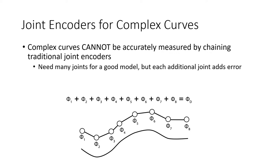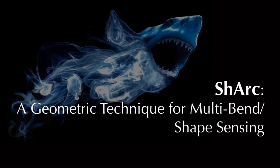You might think: just use a bunch of bend sensors in series to measure complex curves. But that's problematic for a very simple reason: the angular error at each joint accumulates. By the time you get to the end, your understanding of the angle is the sum of all the measurement errors along the way. The more encoders you add, the more measurement error increases. That's why these systems are fundamentally not a good choice for measuring complex curves.